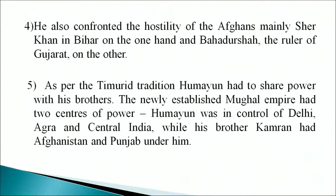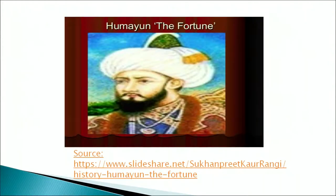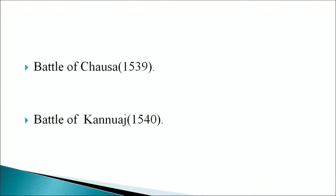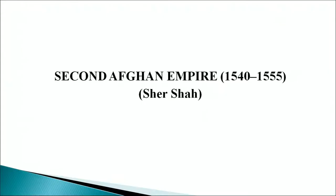As per the Timurid tradition, Humayun had to share power with his brothers. The newly established Mughal empire had two centers of power: Humayun controlled Delhi, Agra, and central India, while his brother Kamran had Afghanistan and Punjab. The picture shows Humayun. He suffered two important defeats — the Battle of Chausa in 1539 and the Battle of Kanauj in 1540. These two battles were decisive victories for Sher Shah, leading to Humayun's loss of the Indian empire.